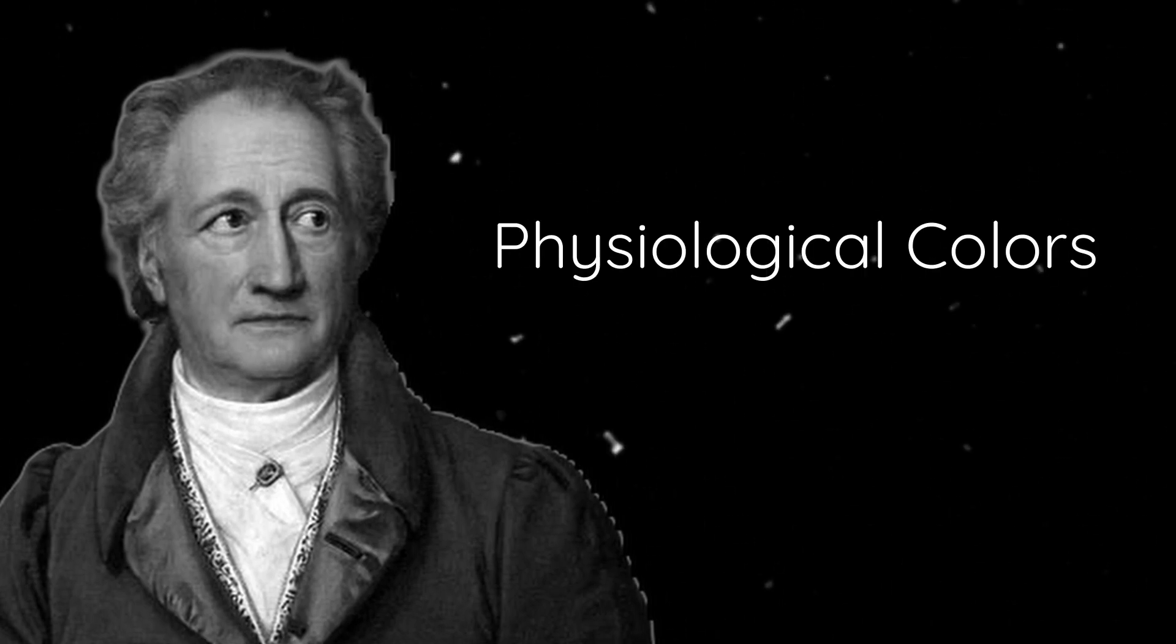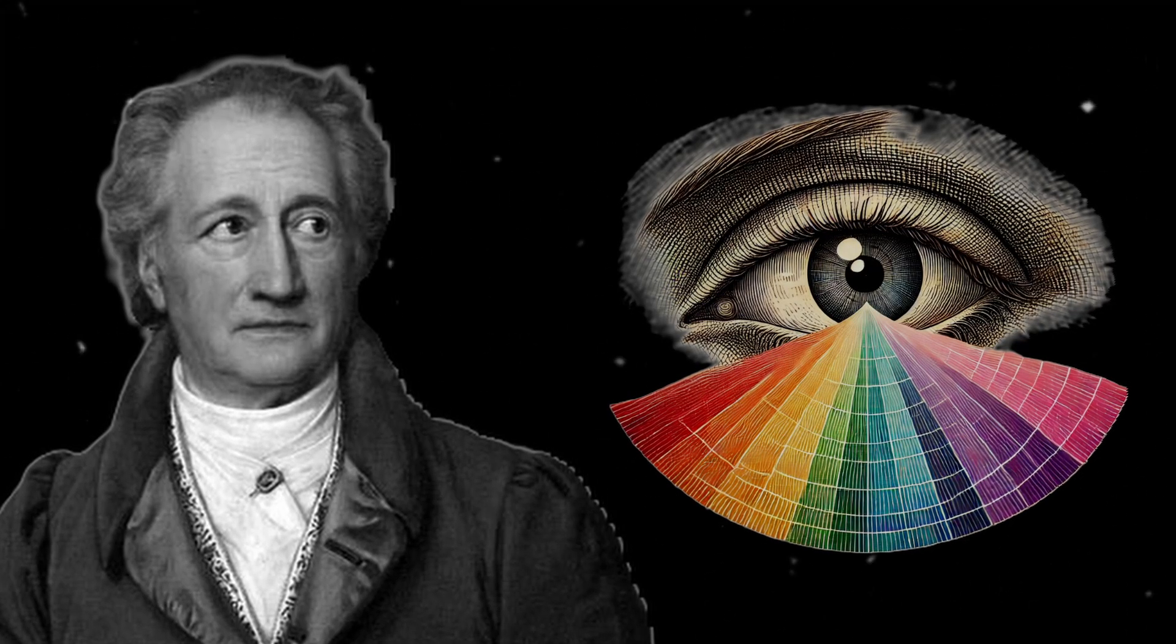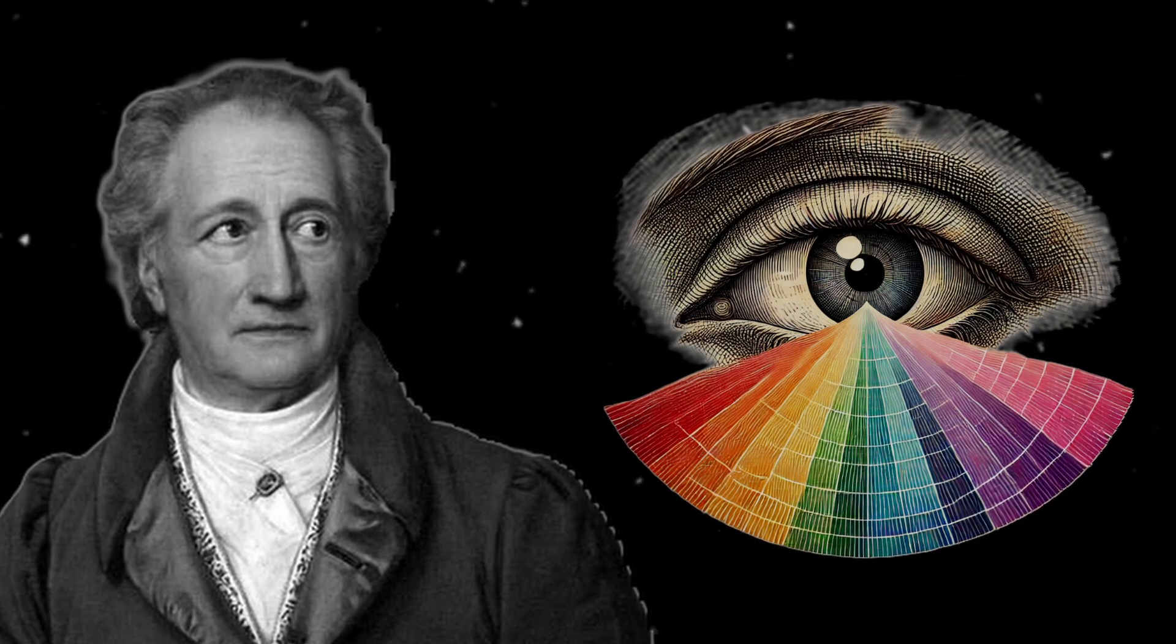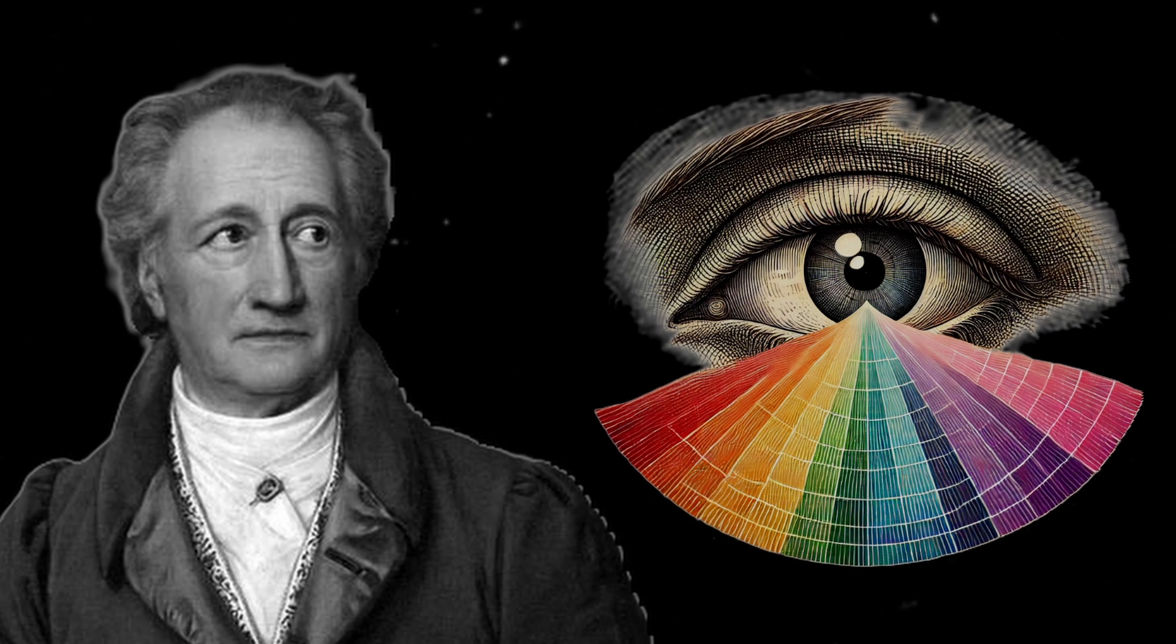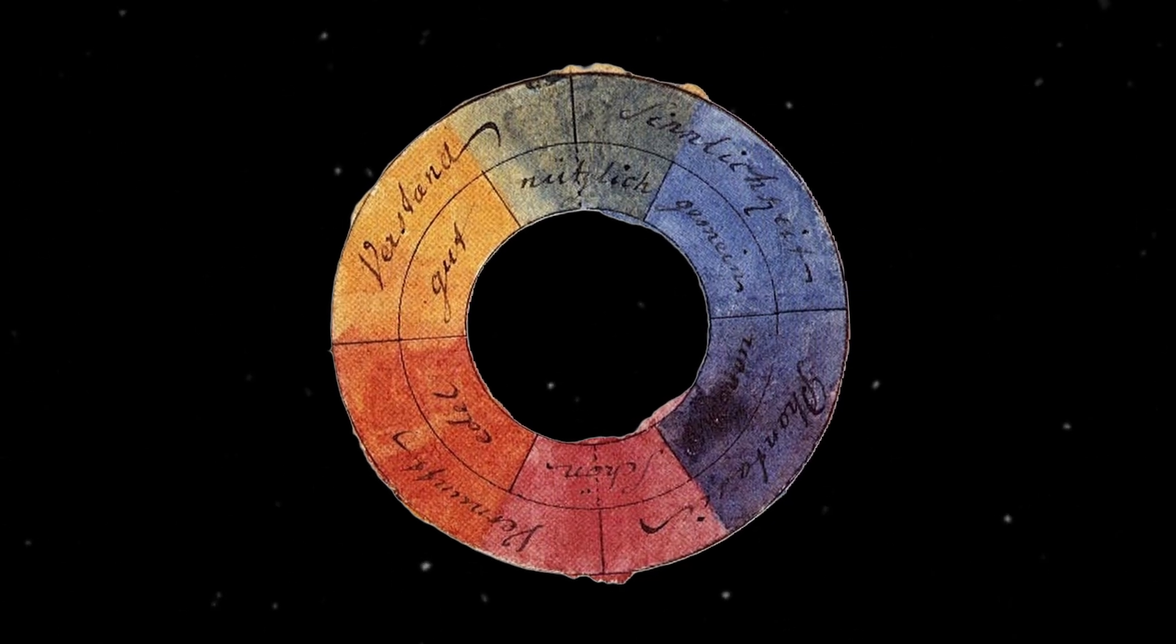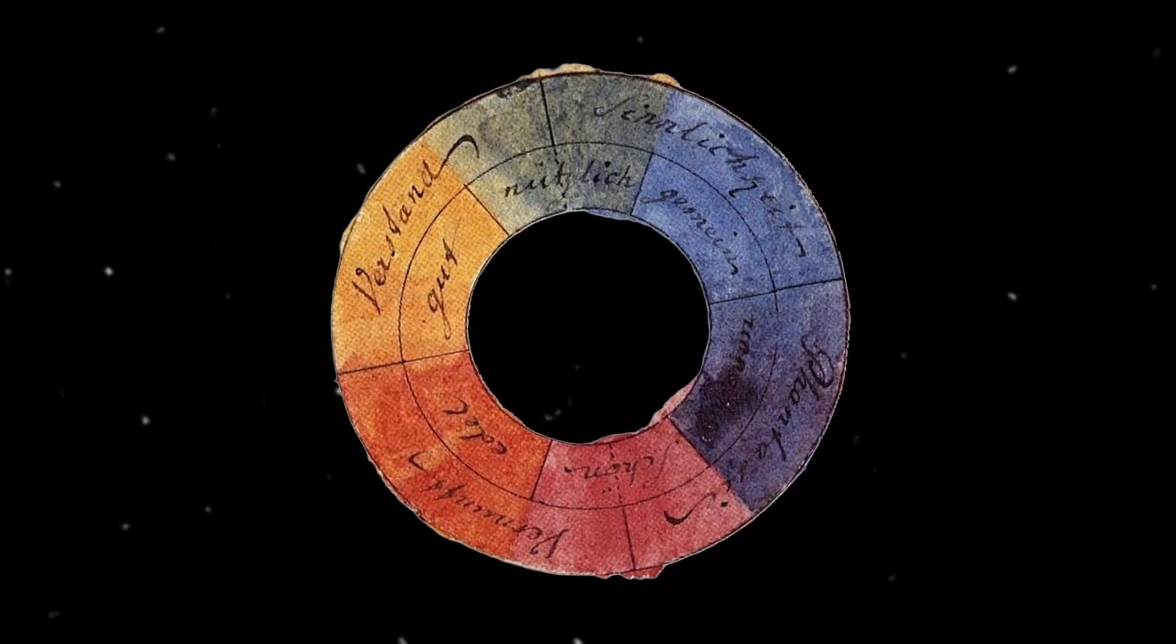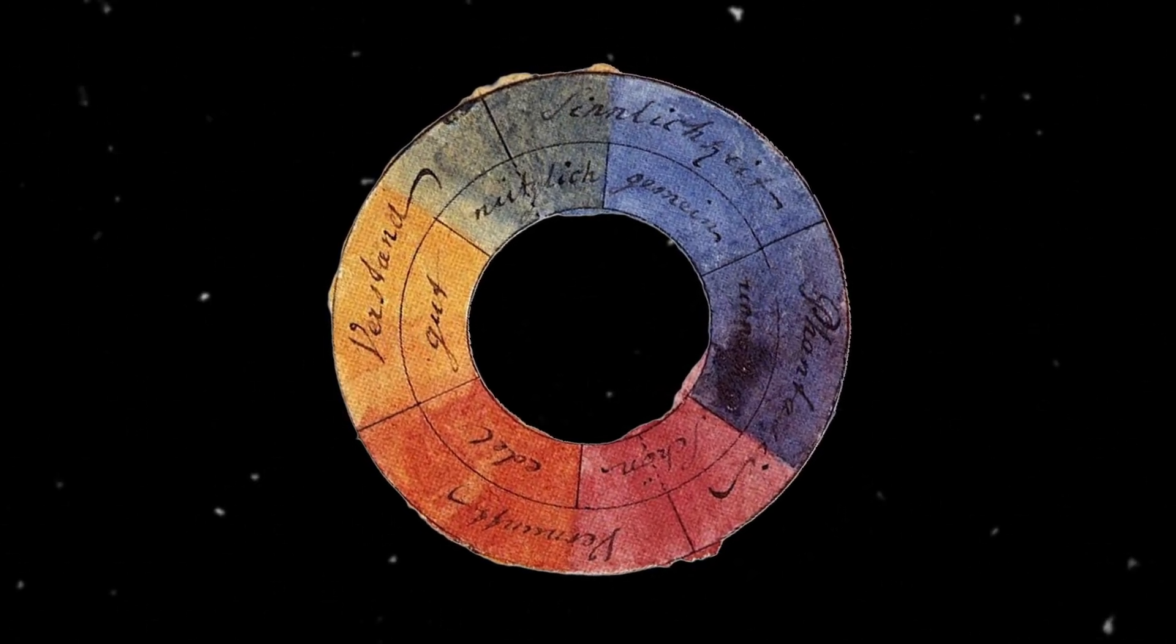Now Goethe was not only interested in colors emerging from a prism, but also in what he called physiological colors. These are the colors as experienced by the human eye. Where the color is in the eye of the beholder. Colors which cannot be measured by scientific devices or calculations, but only exist in the experience of the subject. It is in this most valuable work that Goethe links color theory to philosophy. So let us study this philosophy with two examples. Colored shadows and accidental colors.